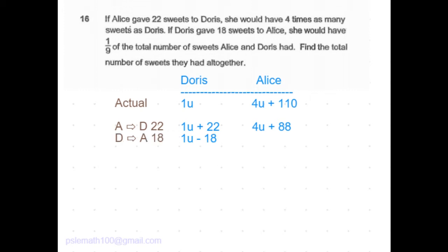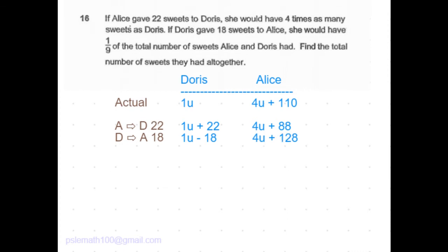Now if Doris gives Alice 18 sweets, she would go down by 18, which means she would have 1u minus 18. And Alice would receive that 18 sweets from 110. That would increase to 128. So Alice would have 4u plus 128.